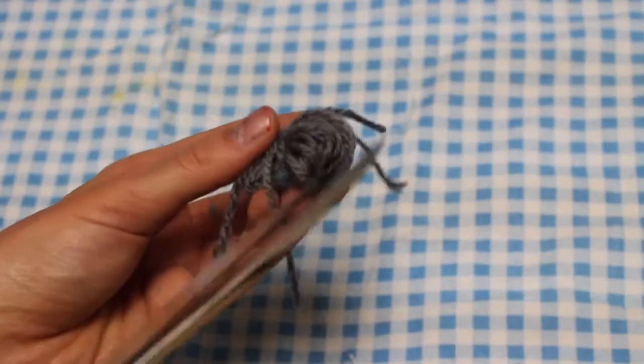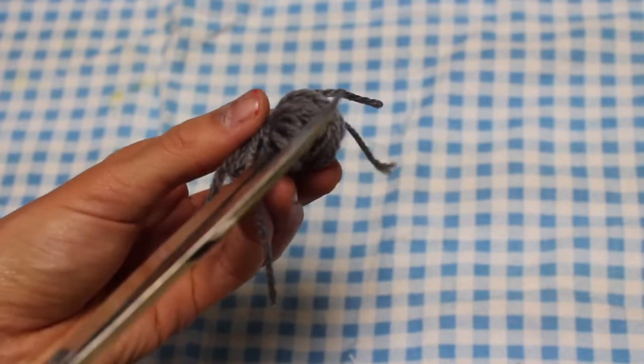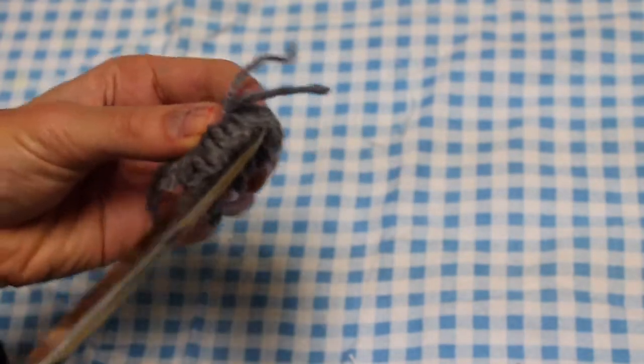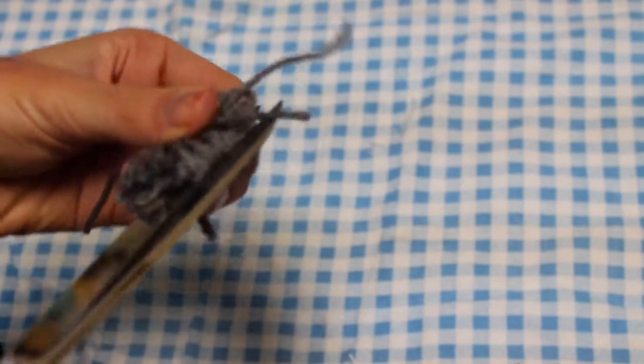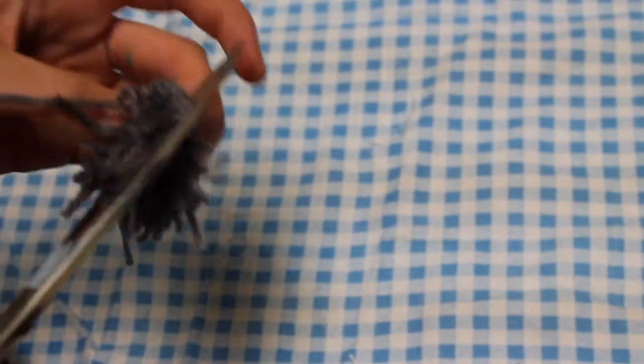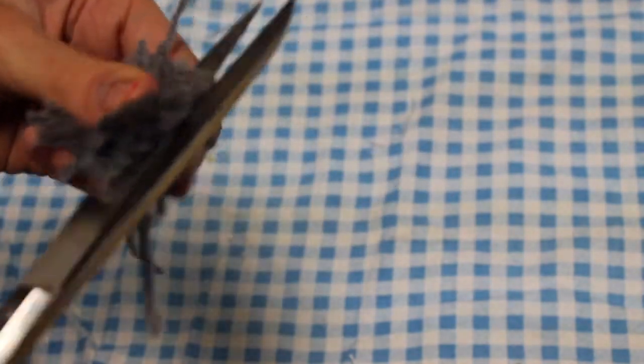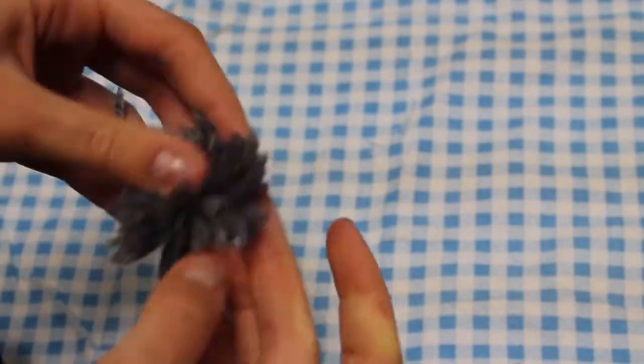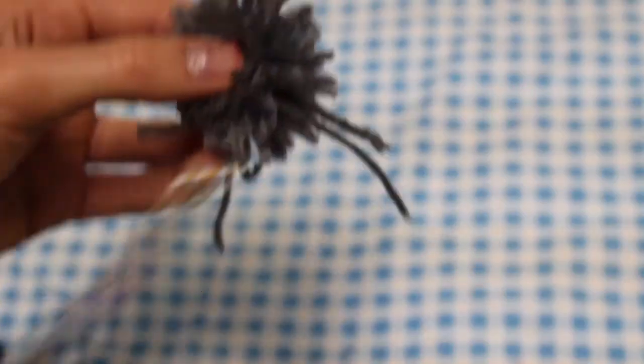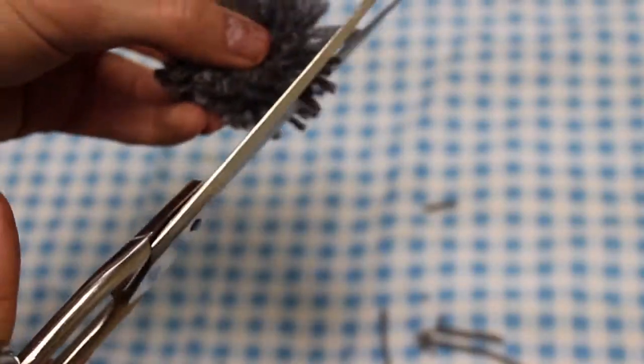The last thing you're going to do is take your scissors and cut through all those loops. It's easiest if you have fabric scissors or something, this makes this process a lot easier. Just cut through on both sides. Once you're done, go ahead and give your pom pom a haircut and just cut off all those loose ends, and kind of spread it out so it looks the way you want it to look.